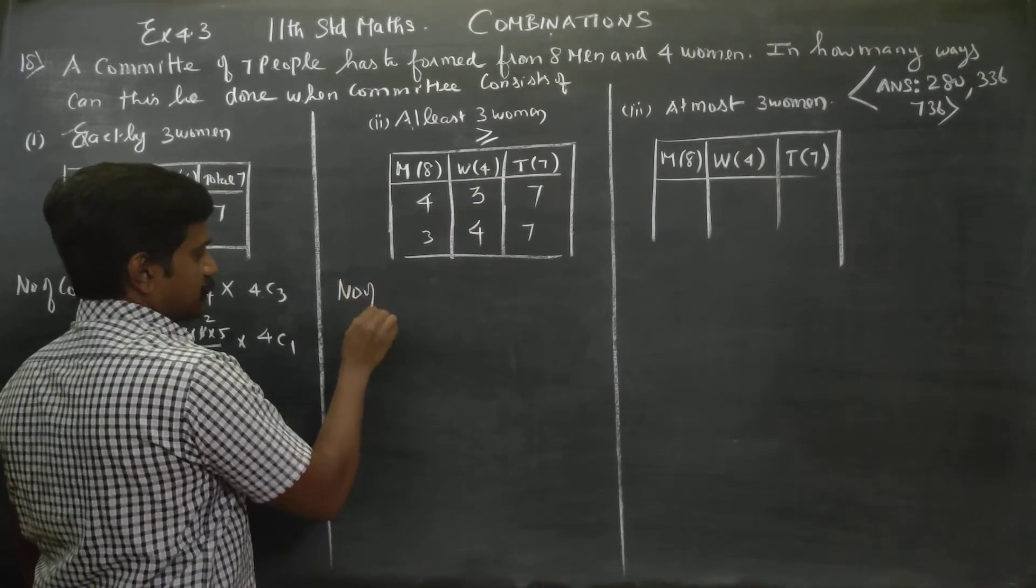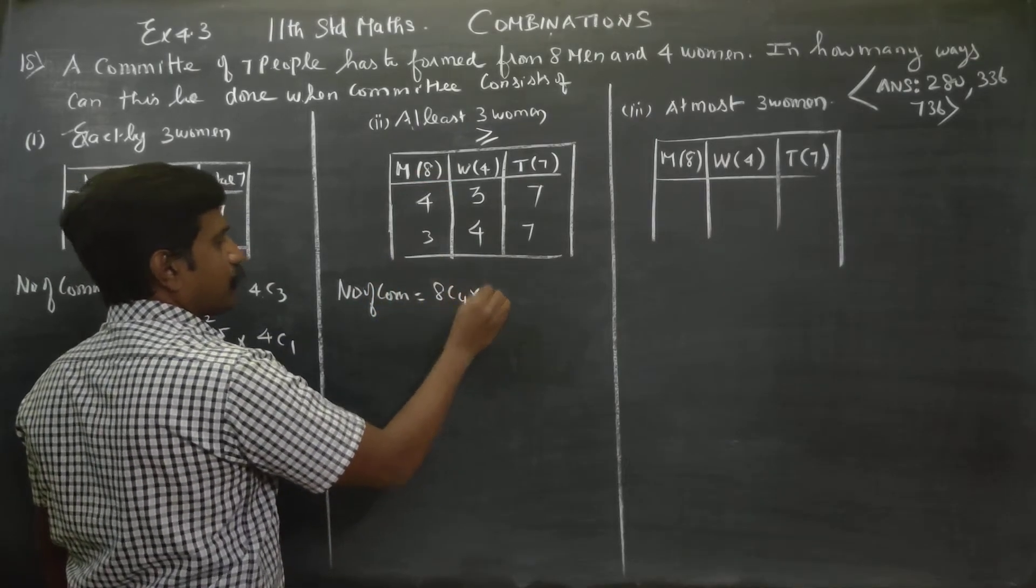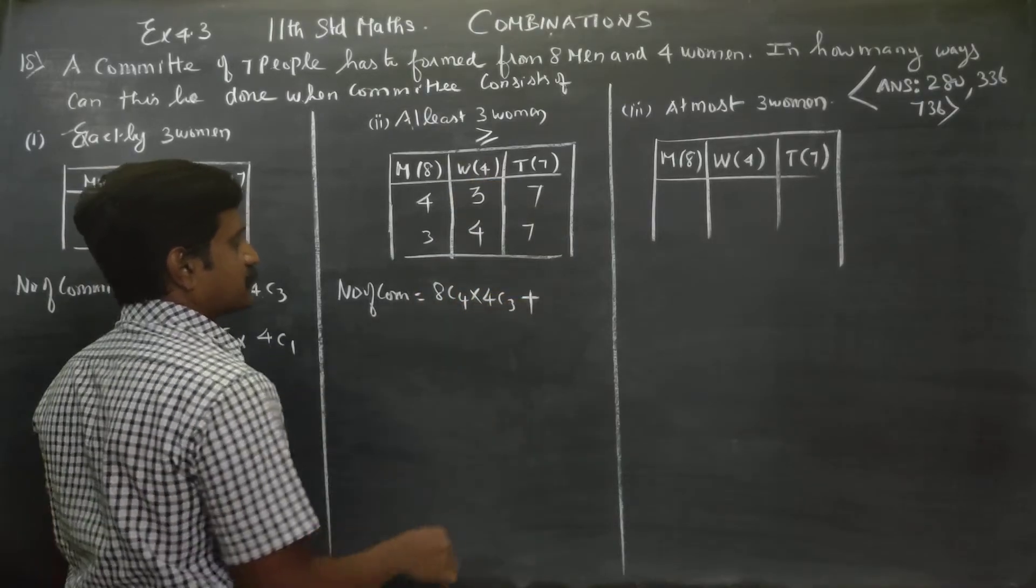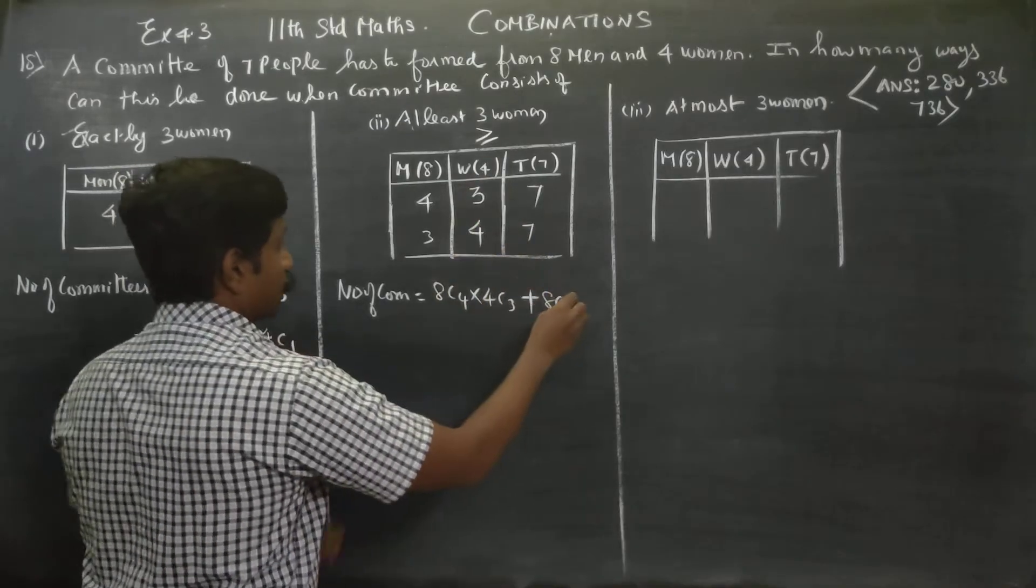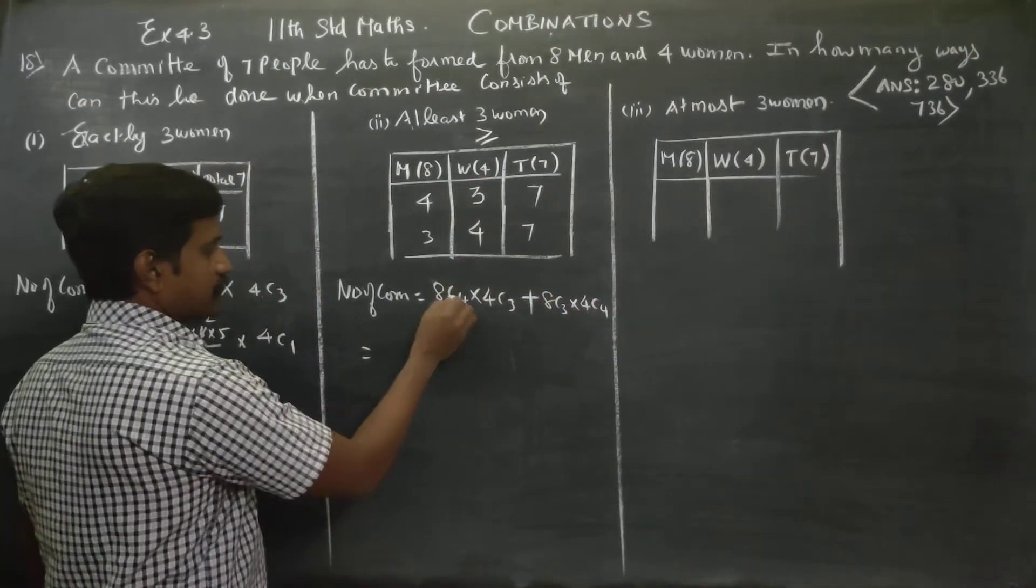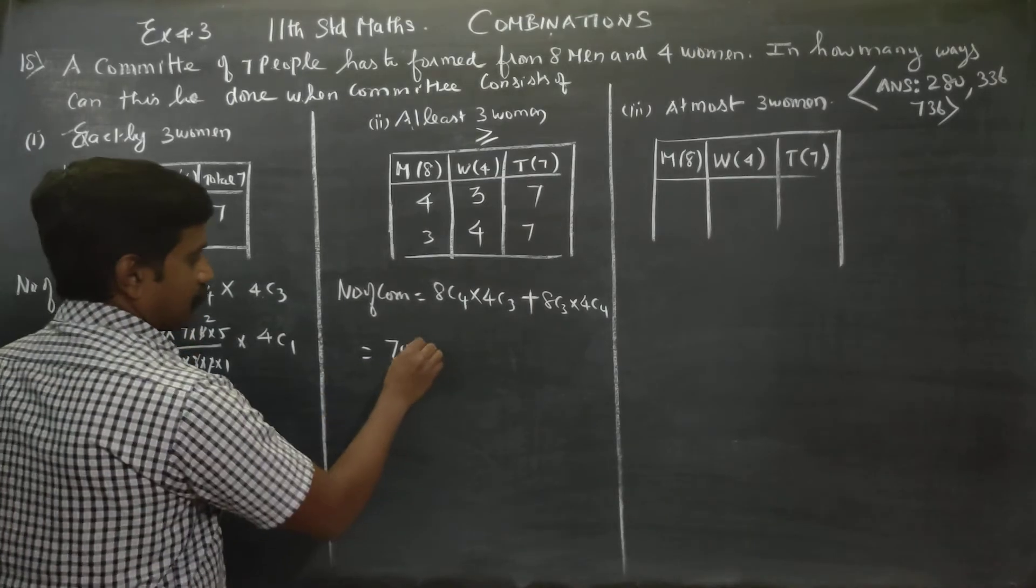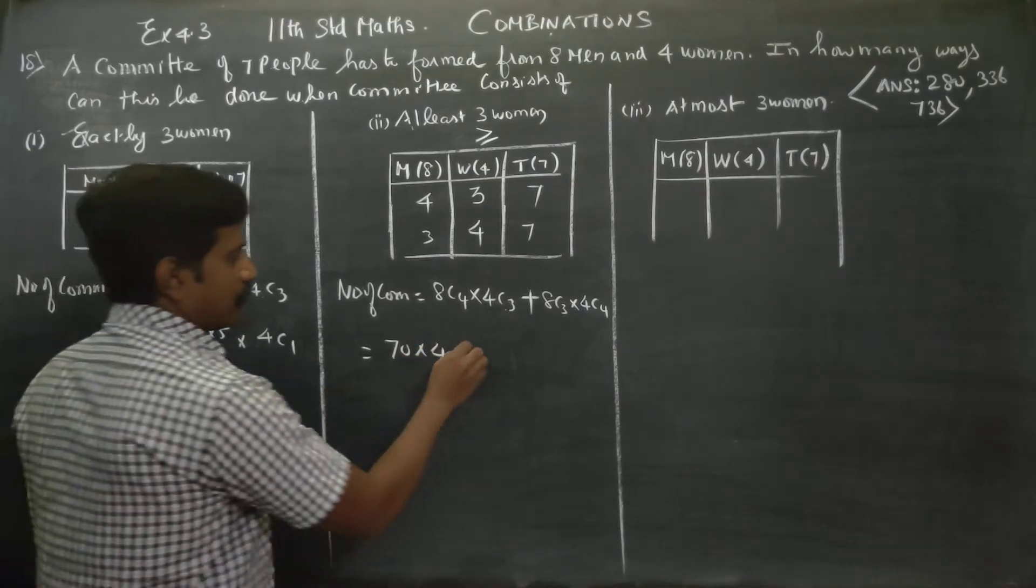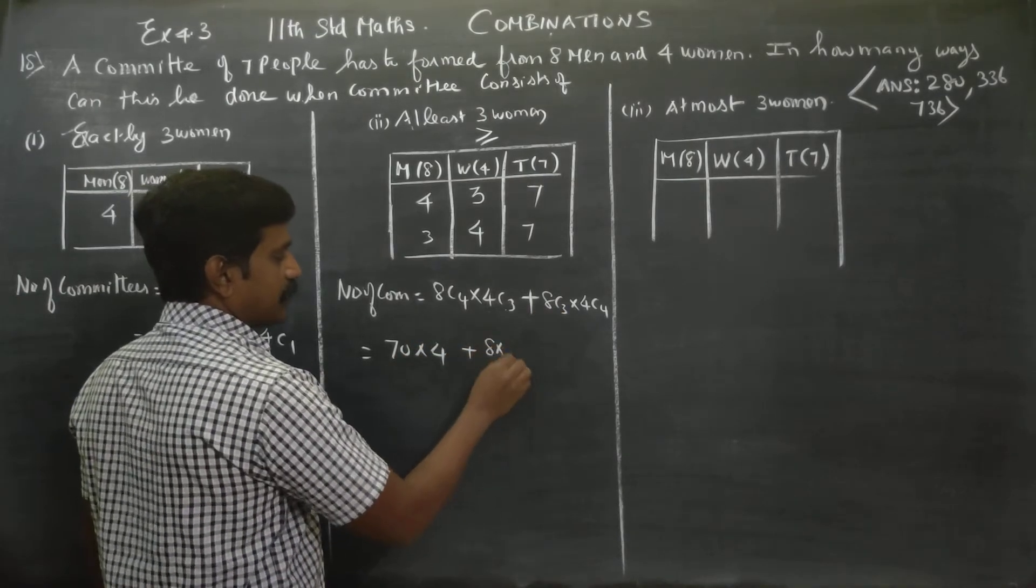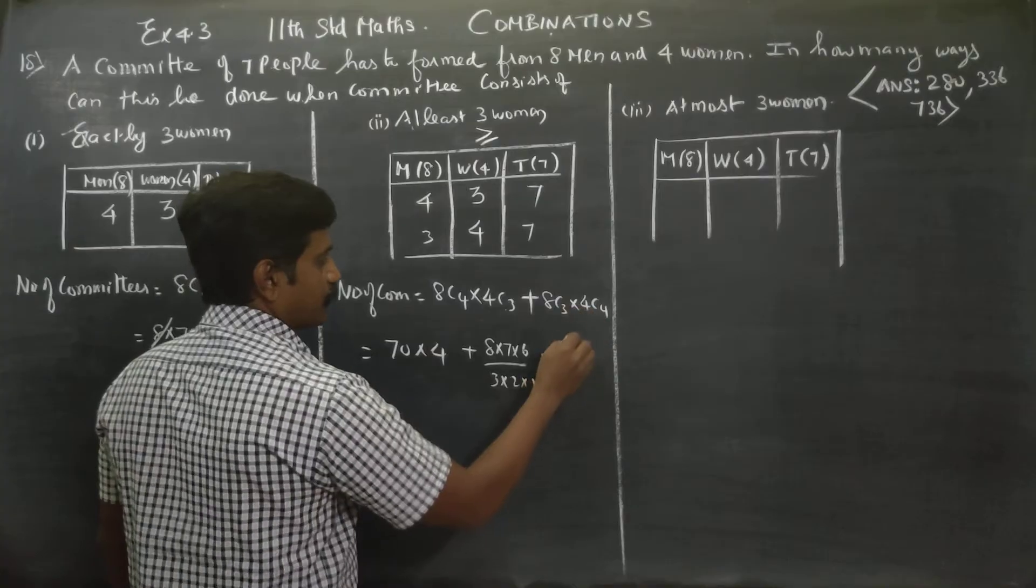Number of committees equals 8C4 times 4C3 plus 8C3 times 4C4. 8C3 can be written as 8 times 7 times 6 divided by 3 times 2 times 1, times 4C4.